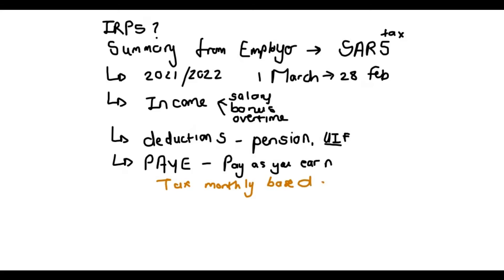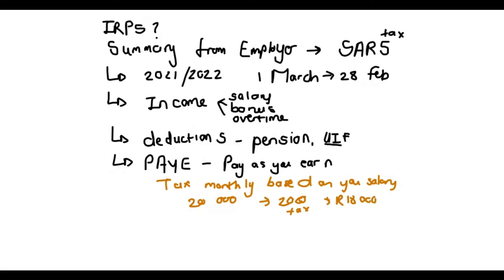So if you earn, let's say, 20,000 Rand, you might pay around 2,000 Rand in tax — that's just an example. At the end of the day, you only receive 18,000 Rand in your bank account. During the year, you already pay some tax to SARS, and your employer does that for you.